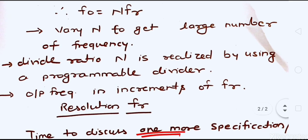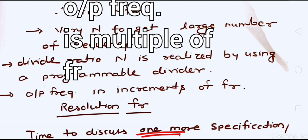The frequency produced by the VCO is stable because of the closed-loop system. Any difference between FR and FD is detected at the error detector and corrected so that FR equals FD and you get a constant output. The reference frequency FR also represents the resolution of the frequency synthesizer, as we discussed — resolution being one of the key specifications.